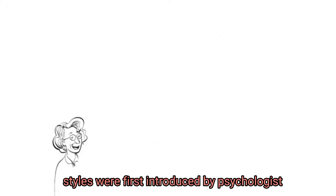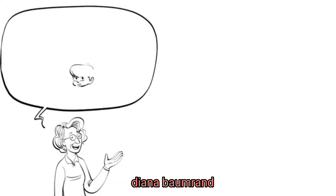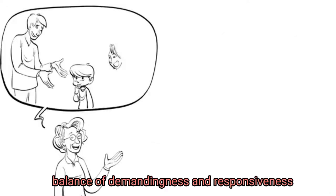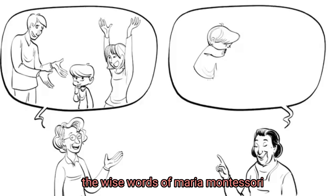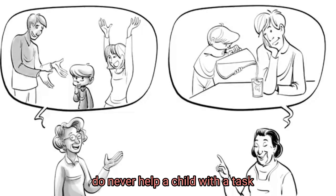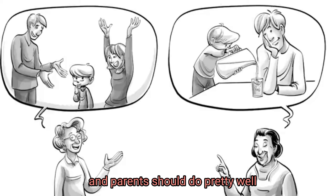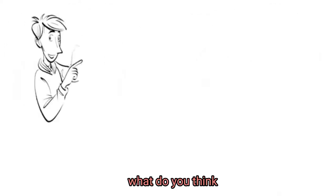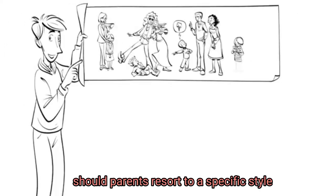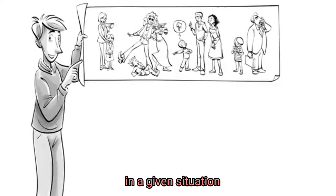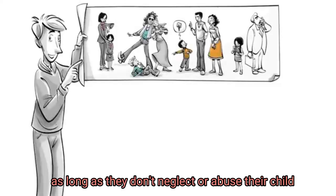The four parenting styles were first introduced by psychologist Diana Baumrind. For good parenting, she advised, balance of demandingness and responsiveness. Add to that the wise words of Maria Montessori to never help a child with a task at which he feels he can succeed and parents should do pretty well. What do you think? Should parents resort to a specific style or should they decide what's best to do in a given situation, as long as they don't neglect or abuse their child?